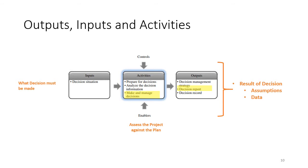In terms of an input-output chart, the decision that must be made comes in as an input. We analyze the decision information and make a good decision, and the output is the result of that decision. Very importantly, along with the decision, we establish the assumptions and the data that were used for the decision.